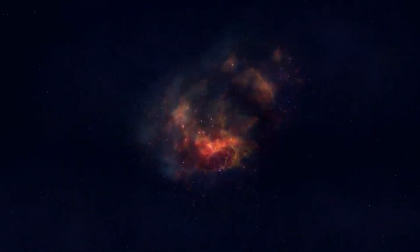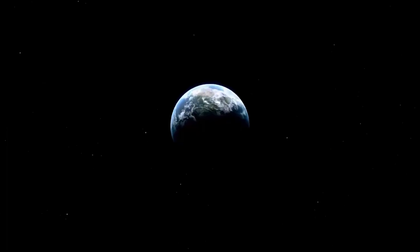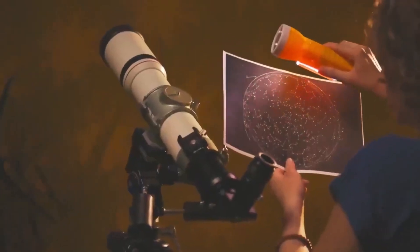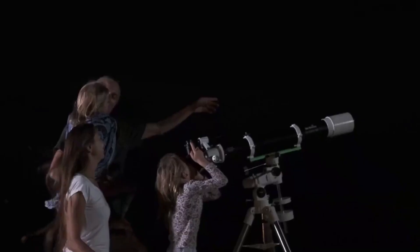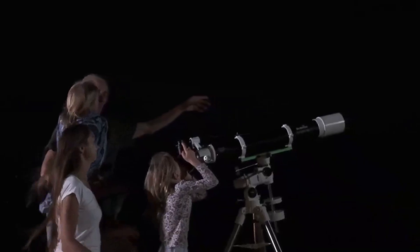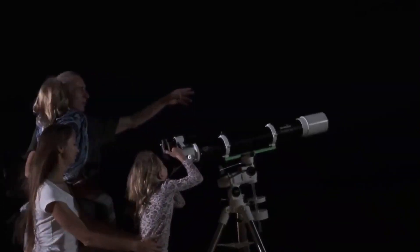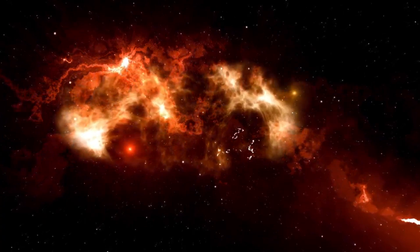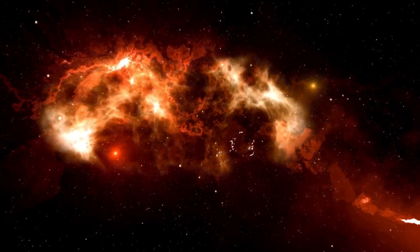But the supernova of Betelgeuse would not be without risks. While the star is far enough away that the explosion would not pose a direct threat to Earth, the intense radiation and cosmic rays emitted by the supernova could have an impact on our planet's atmosphere. Some scientists have speculated that a nearby supernova could deplete the ozone layer, increasing the amount of harmful ultraviolet radiation reaching the Earth's surface. However, the likelihood of such an event is low, and the scientific community is more focused on the potential benefits of observing a supernova up close.